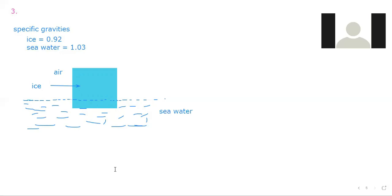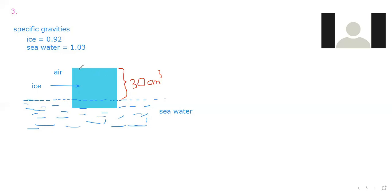The question says 30 cubic centimeters of ice is exposed to the air. The volume exposed to the air is 30 cubic centimeters. This volume is 30 cubic centimeters.